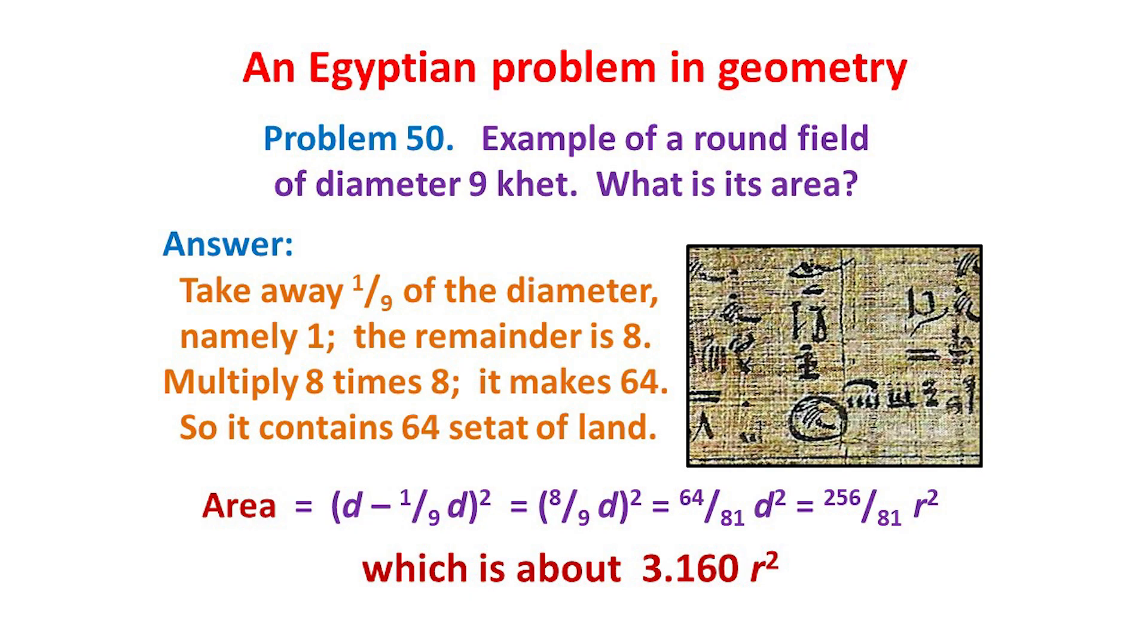And then to square the result to give an answer of 64. Using our algebraic notation, which they didn't have, we start with the diameter D, subtract 1/9 of it to leave 8/9 times D, and then square the result to give 64/81 times D². In terms of the radius, this area is then 256/81 r², giving a value for pi of about 3.160. And impressively, this result from nearly 4,000 years ago is within 1% of the true value.